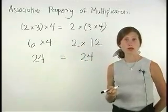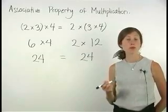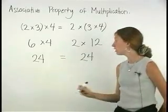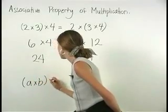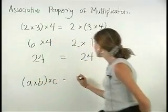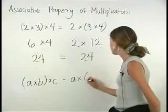The associative property of multiplication can be written in a more general way, as a times b times c equals a times b times c.